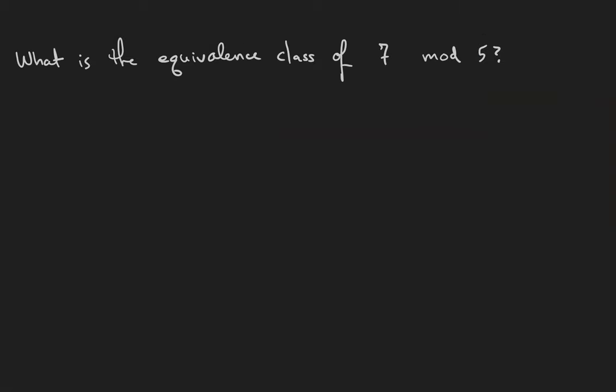If we have an equivalence relation, then that means we have equivalence classes. What is the equivalence class of 7 modulo 5? Well, of course, we're going to have 7 in this equivalence class.